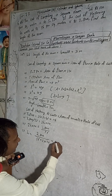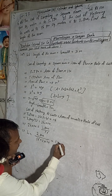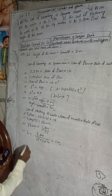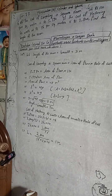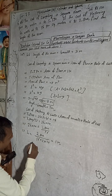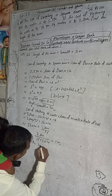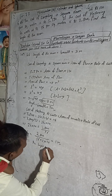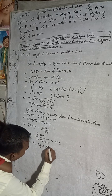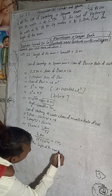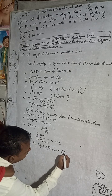We get h equals 5 meters. So the height of the room is equal to 5 meters. This is the required solution of the question: find the height of the room — and the answer is 5 meters.